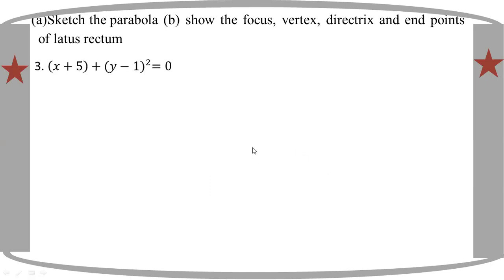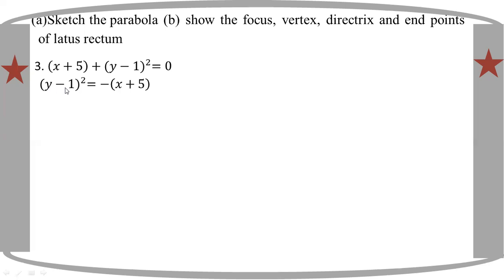Let's have the equation: (x plus 5) whole square plus (y minus 1) whole square equal to 0. We have a particular parabola in standard equation. Comparing, we know that (y minus k) whole square is equal to minus 4p times (h minus x) whole square.